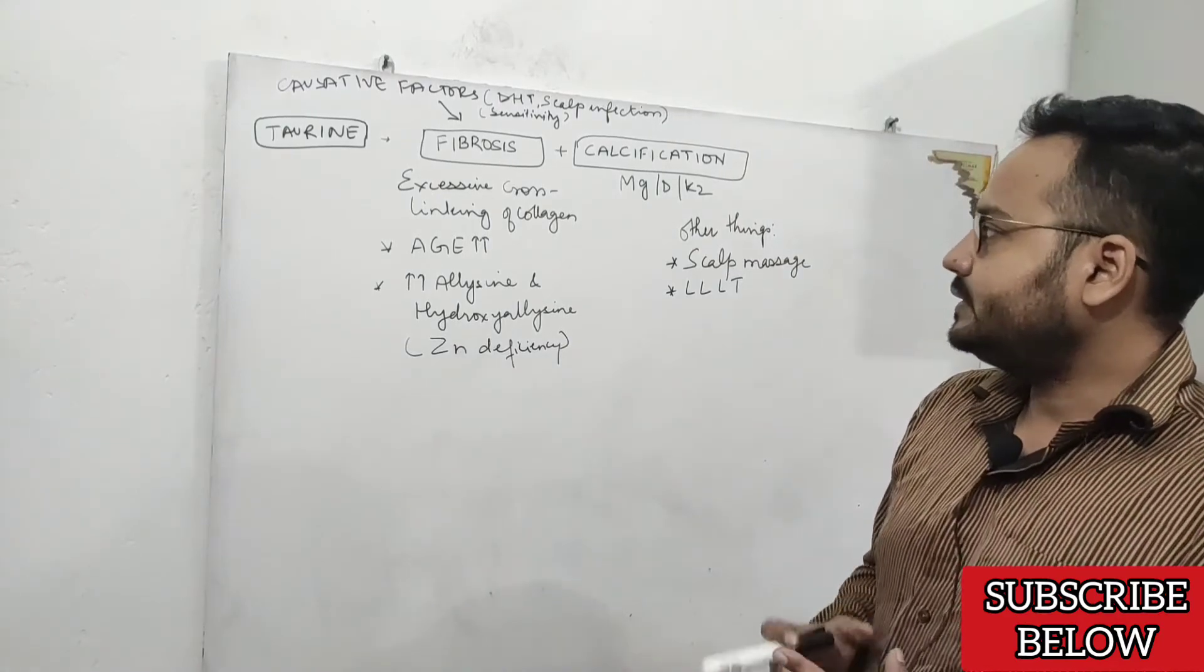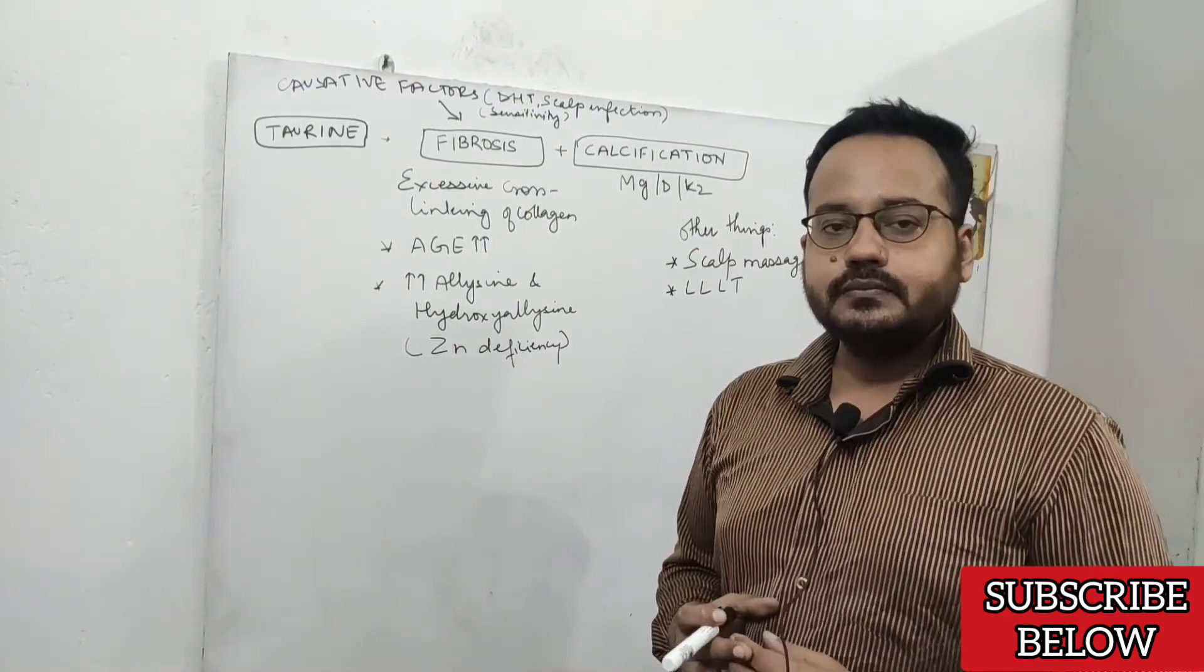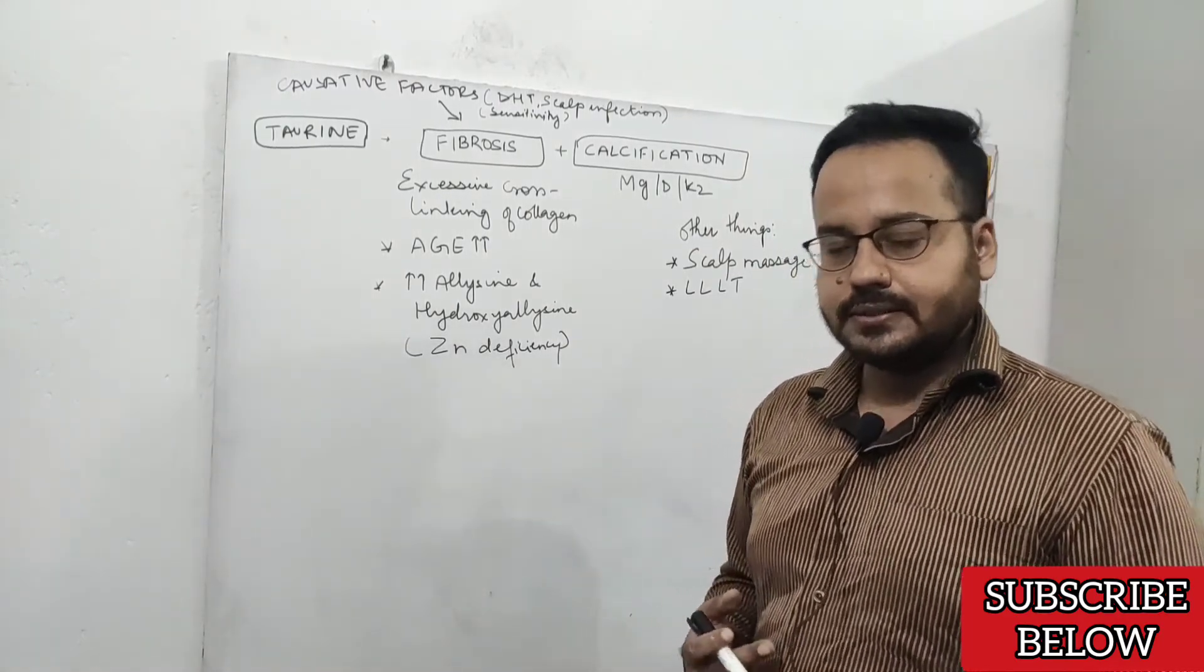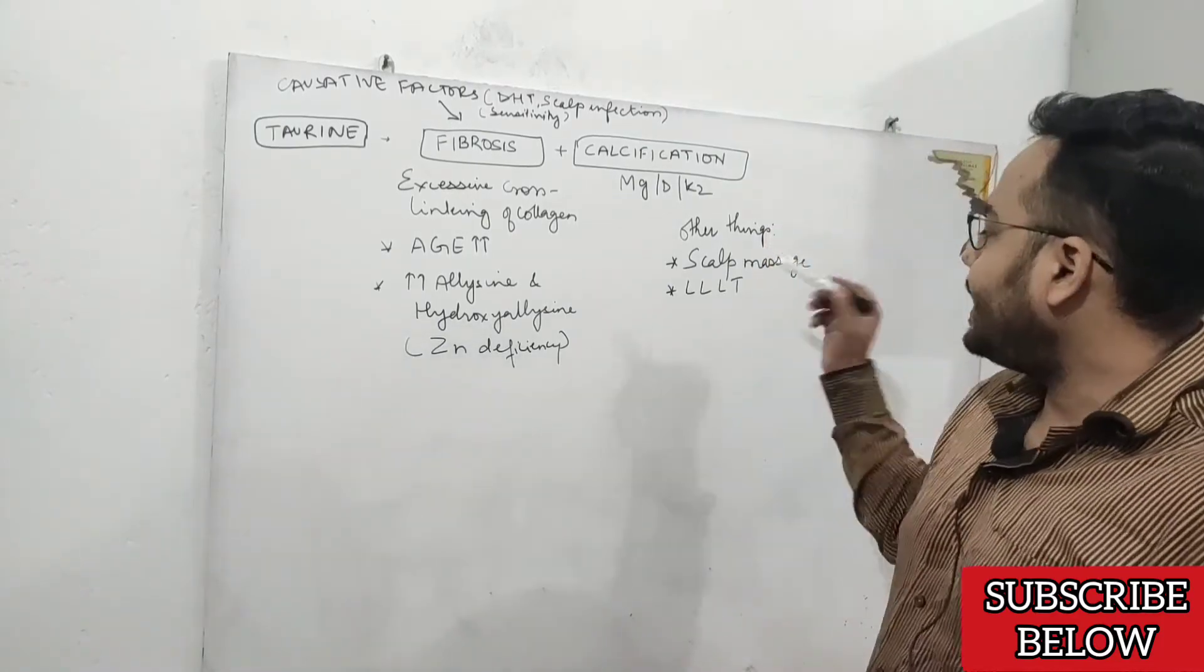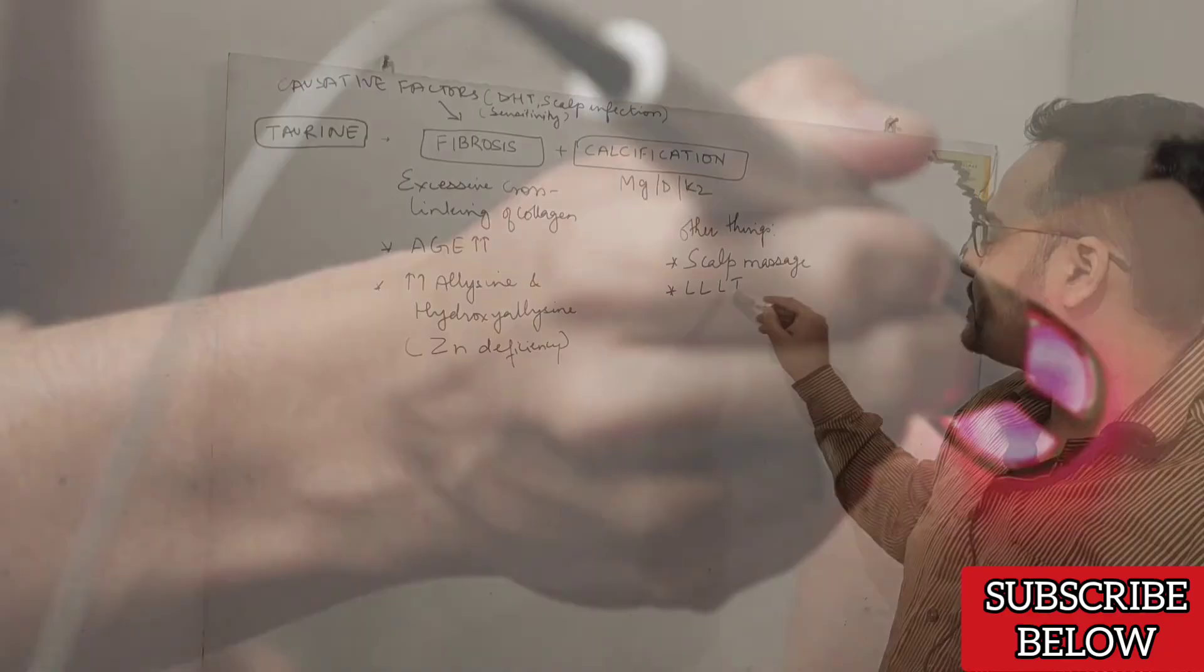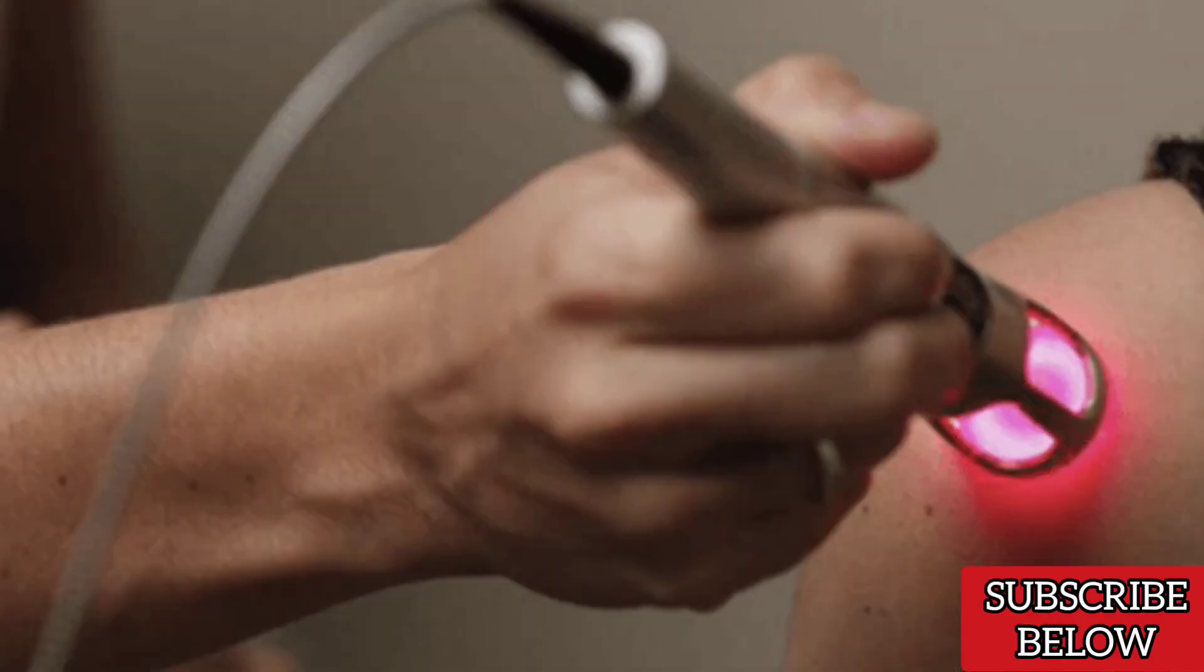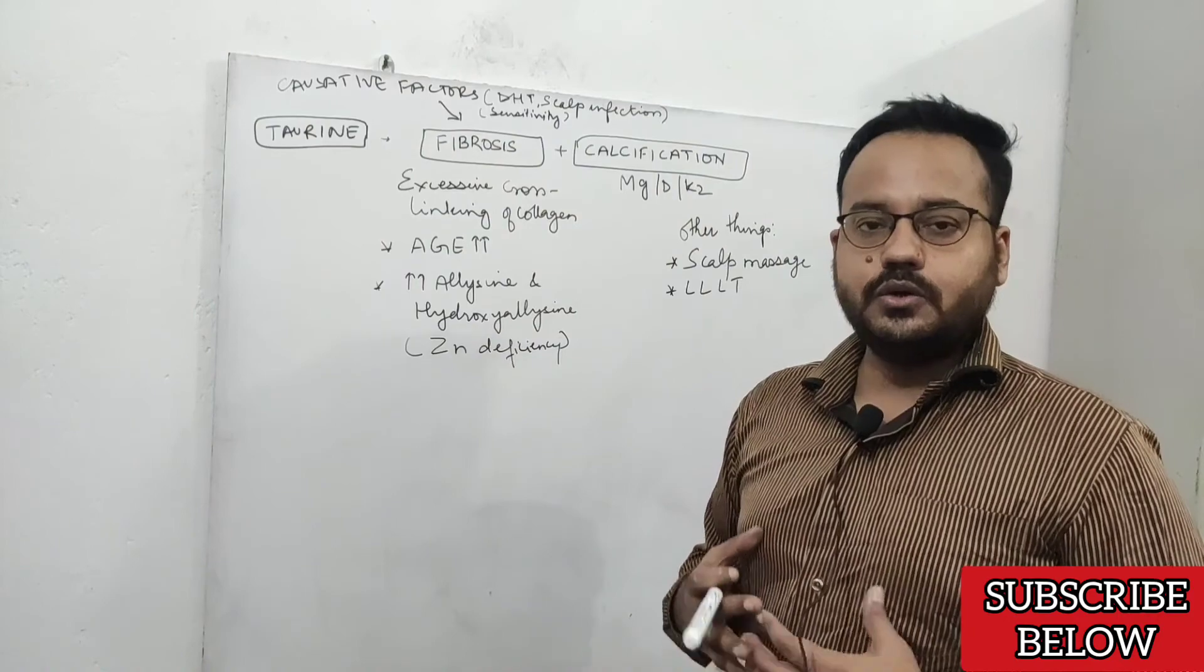There are other things you can do for improving circulation and stem cell proliferation, like scalp massage and low-level laser light therapy. These two things can also be tried to help in regrowth of your hair.